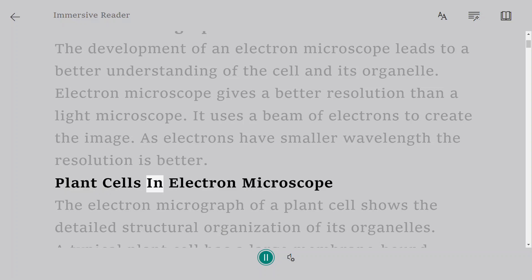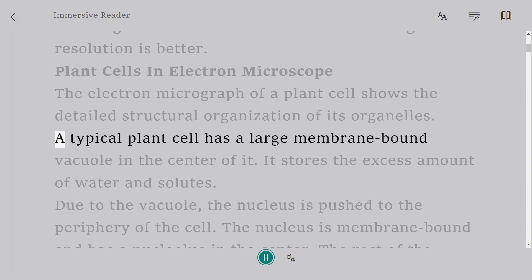Plant Cells in Electron Microscope. The electron micrograph of a plant cell shows the detailed structural organization of its organelles. A typical plant cell has a large membrane-bound vacuole in the center of it. It stores the excess amount of water and solutes.